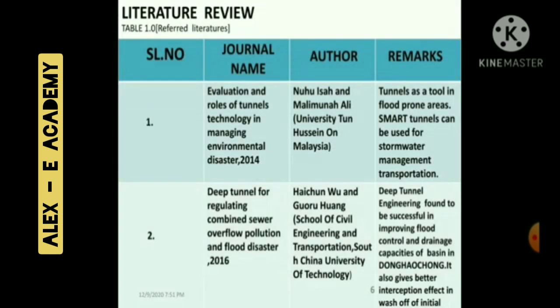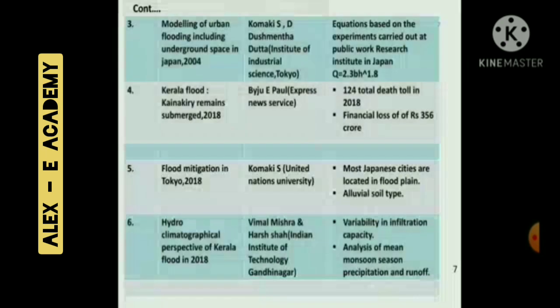The literature review of our project includes: first, evaluation and roles of tunnel technology in managing environmental disasters in 2014, used for stormwater management and transportation. Second, deep tunnel for regulating combined receiver overflow pollution and flood disasters in 2016, which gives a better interception effect in wash-off or initial run-off. Third, modeling of urban flooding including underground space in Japan in 2004, with the equation QC equal to 2.3 × BH raised to 1.8.